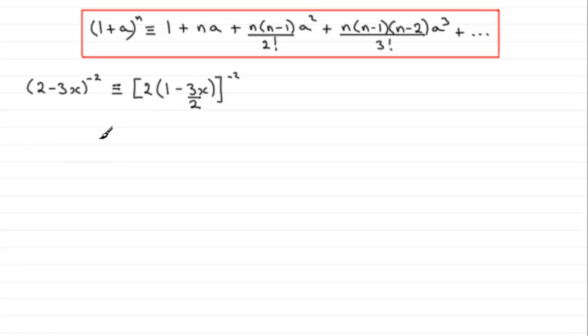Now when you have it at this stage, we can say that this power can now be put on the 2 and on this bracket, so we've now got 2 to the power minus 2 multiplied by 1 minus 3 over 2x and that 2 is to the power minus 2. And 2 to the minus 2 is 1 over 2 squared or in other words a quarter.